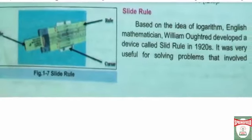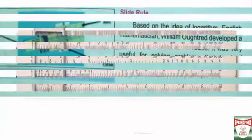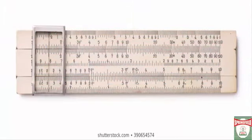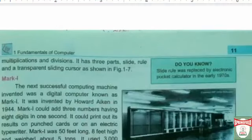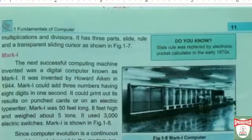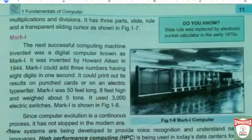Now we talk about the Slide Rule. Based on the idea of logarithms, English mathematician William Otter developed a device called the slide rule in the 1920s. It was very useful for solving problems that involved multiplication and division. It has three parts: the slide, the slide rule, and a transparent sliding cursor.